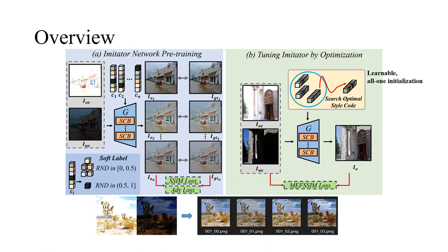In the second stage, we create a learnable style code with all one initialization. And then freeze the pre-trained imitator network and search for the optimal style code by optimizing MEF SSIM loss in the gradient descent way. Finally, EMEF is able to produce the best fusion result from the combined space of the MEF target methods.